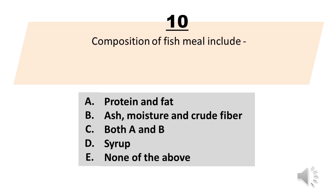Composition of fish meal includes: A. Protein and fat. B. Ash, moisture, and crude fiber. C. Both A and B. D. Syrup. E. None of the above.